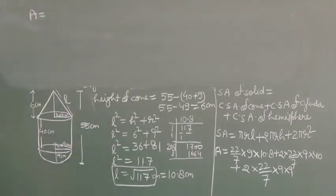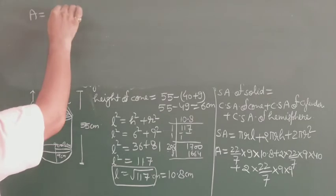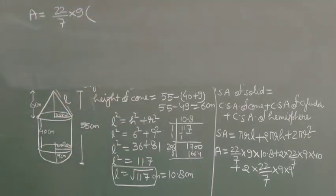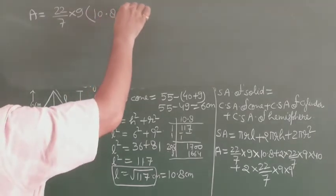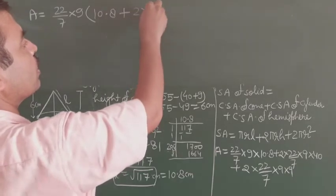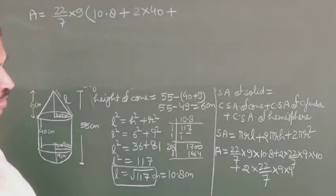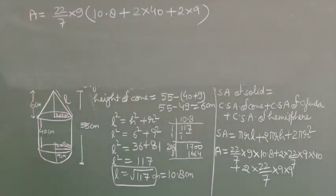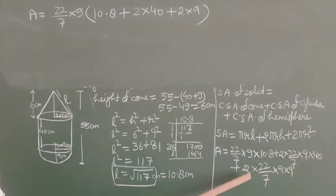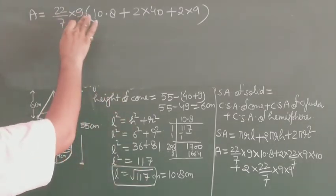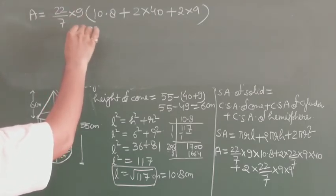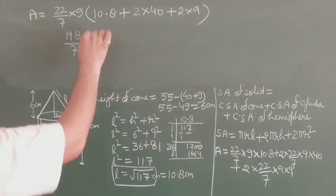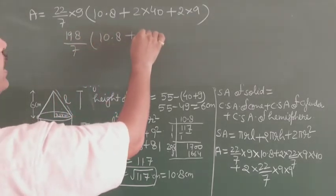Now taking common factor (22/7) × 9: what is left inside the brackets is 10.8 + 2 × 40 + 2 × 9. That gives (22/7) × 9 × (10.8 + 80 + 18). Let us solve: 198/7 multiplied by 108.8.